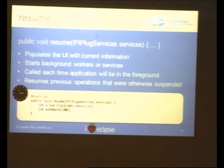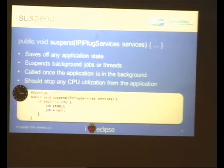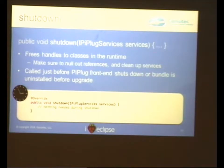Resume is called at the beginning of your app when you enter it for the first time, and then again after a suspend when you go back into the app. The 'suspend' method stops the background thread — any animations or background things you have running. It's the same concept as on a mobile phone: once you stop using an application you want to close it down so it doesn't use battery or processing power. Finally, 'shutdown' — when we want to unload the bundle, we clear all references and clear it out.